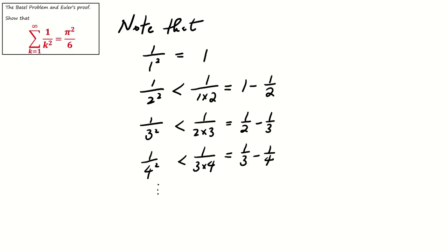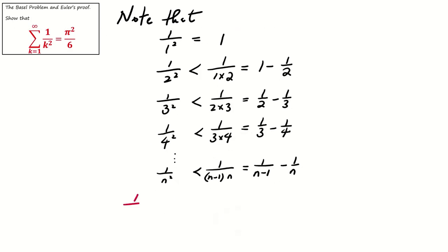We can continue with the same pattern: 1 over n squared is less than 1 over (n minus 1) times n, which equals 1 over (n minus 1) minus 1 over n. So the sum from 1 to n of 1 over k squared is less than 1 plus (1 minus 1/2) plus (1/2 minus 1/3) and continuing the pattern until 1 over (n minus 1) minus 1 over n.